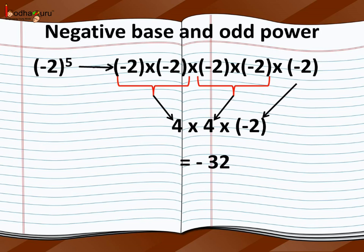And now we multiply the positive number with the negative number, so the product would be negative. For example, here we have 4 multiplied by 4 multiplied by minus 2. 4 into 4 is 16, and 16 when multiplied by minus 2 becomes minus 32. So, we have the answer as negative.